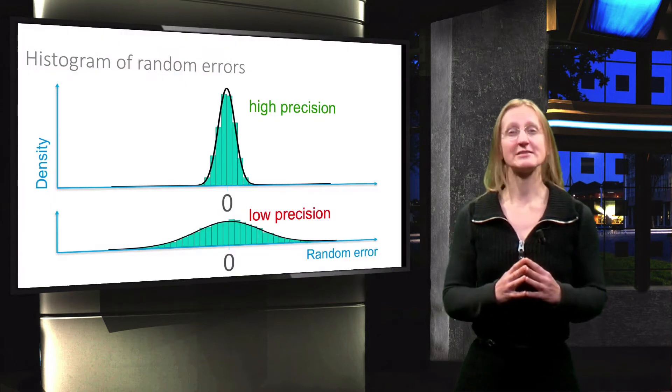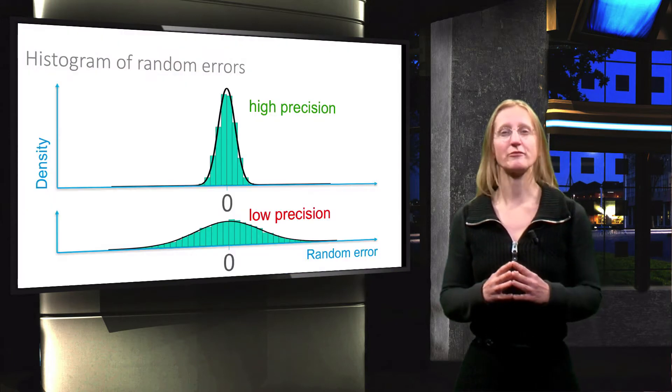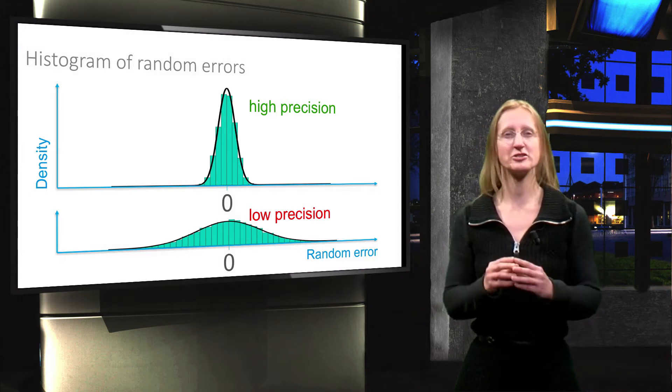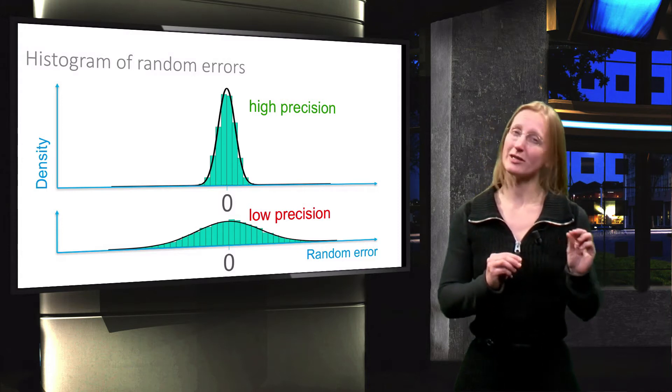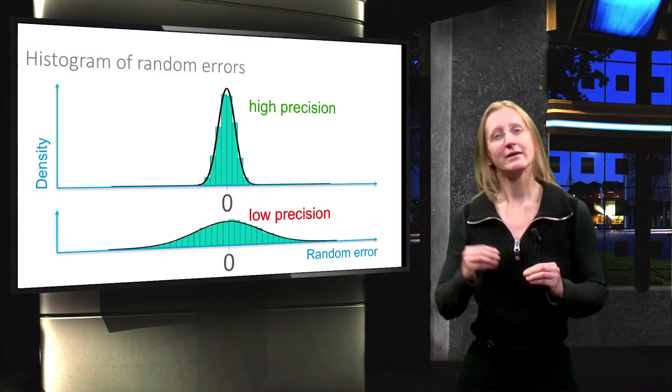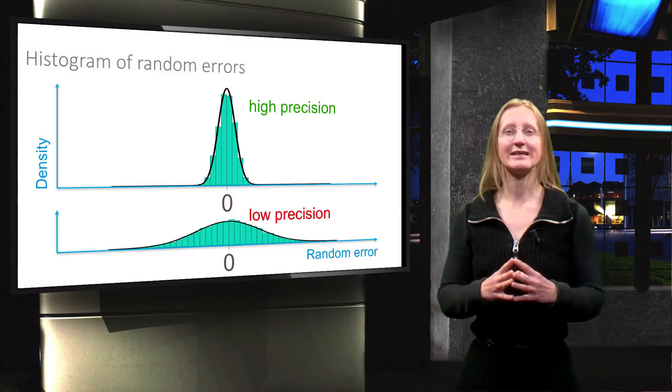We finished the previous lecture with the distributions of random errors for an example with high precision and a situation with low precision.